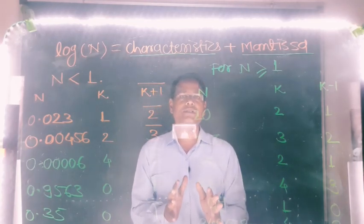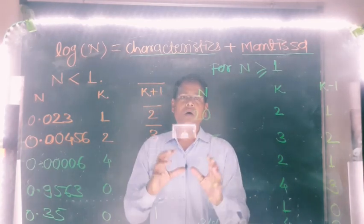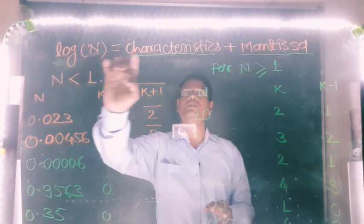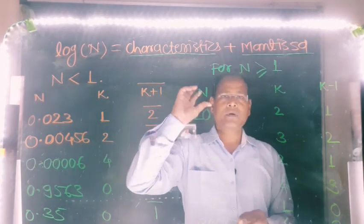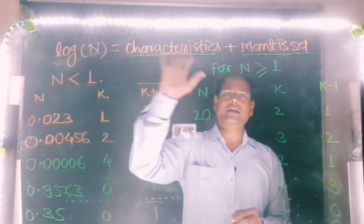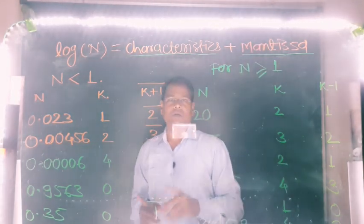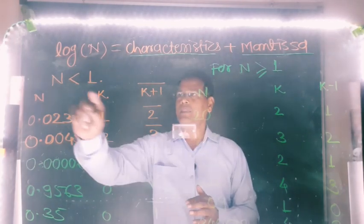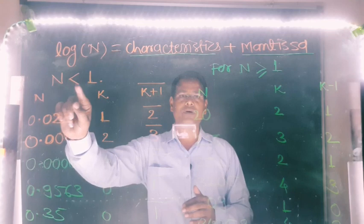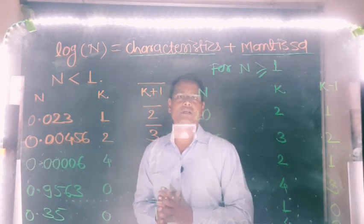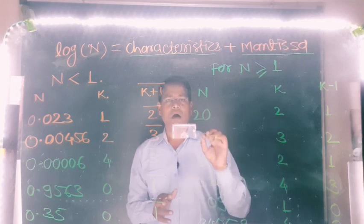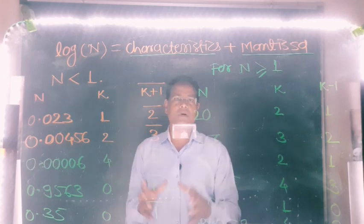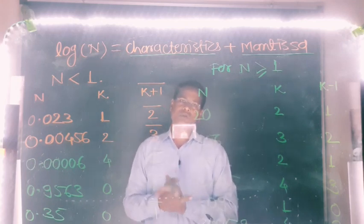So this is the method to find the characteristics of a given number when we have to find the log of a given number. Log of any number equals characteristics plus mantissa. First step: find characteristics. There are two methods — one for numbers greater than or equal to 1, and one for numbers less than 1. In the next lecture we will find out how to find the mantissa of a given number. Thank you.